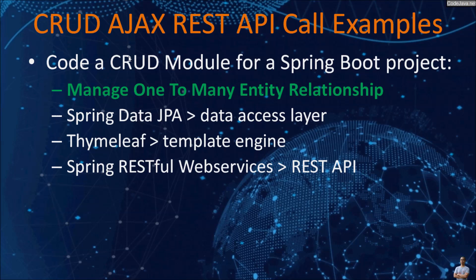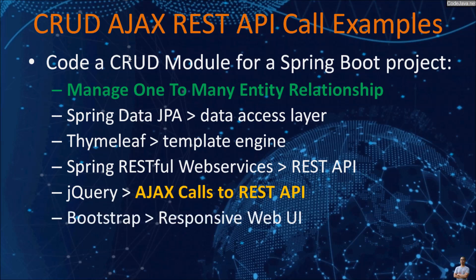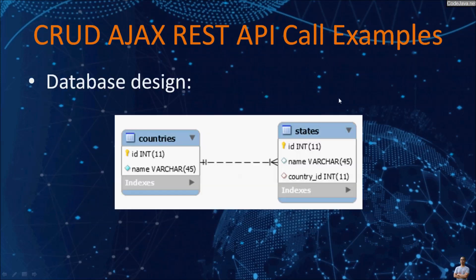We use Spring RESTful web services to expose a REST API to the clients. On the client side we use jQuery to make AJAX calls to consume the REST API, and we use Bootstrap to make a responsive web user interface, and we use a MySQL database. This is a one-to-many entity relationship we are going to manage in this second part — between the two tables countries and states. A country can contain one or more states, and a state belongs to only one country. In the first part we already implemented the CRUD module for managing countries, and in this second part we are going to implement another module for managing states.